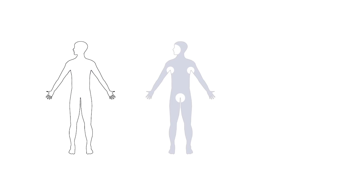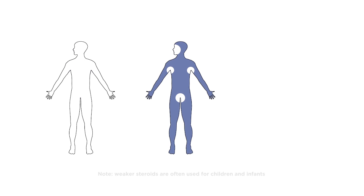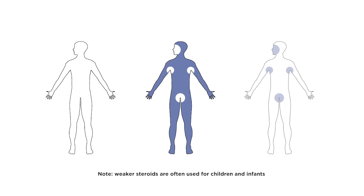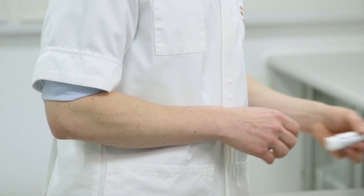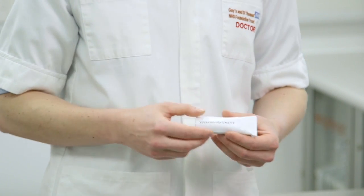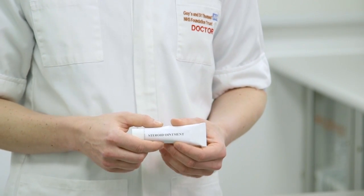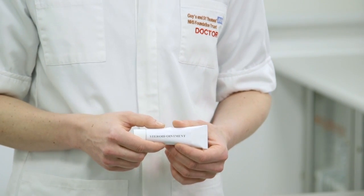It is important to remember that topical steroids come in different strengths. Stronger steroids tend to be used on the body whilst weaker steroids are used on the face and skin folds. They come as ointments or creams. Steroid ointments are oilier and are therefore better for treating drier skin.